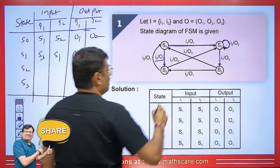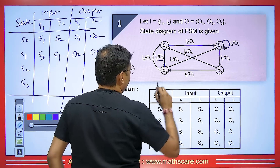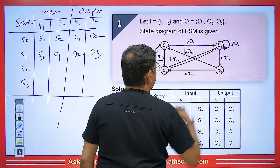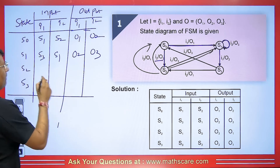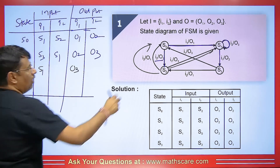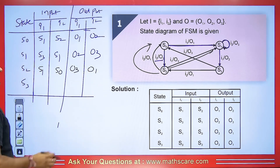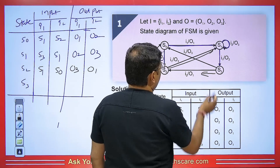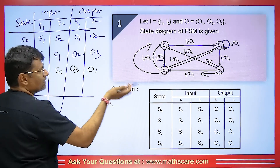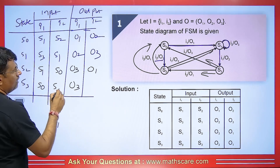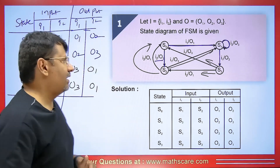Let us talk about S2 — one arrow of S2 is going to S1 with input I1 and output O3, and another arrow is going to S0 with input I2 and output O1. Now S3: S3 is going to S0 with input I1 and corresponding output O3. S3 is going to S2 with input I2 and output O1. This is how we make a table.